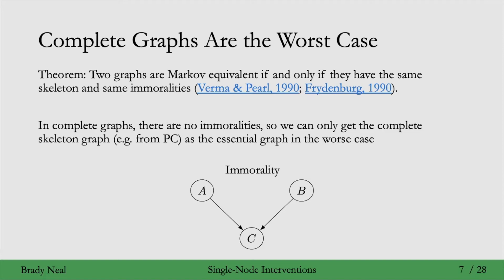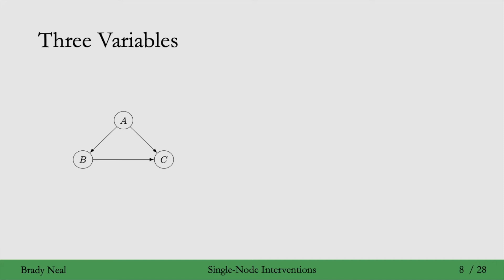In summary, complete graphs are the worst case because they give us n choose 2 edges that need to be oriented by interventions — the most edges you can imagine needing to be oriented. This worst case is important to have in mind when we try to determine the necessary number of interventions. Two slides ago we saw the two-variable case, and now we'll look at the three-variable case using the complete graph since that's the worst case.